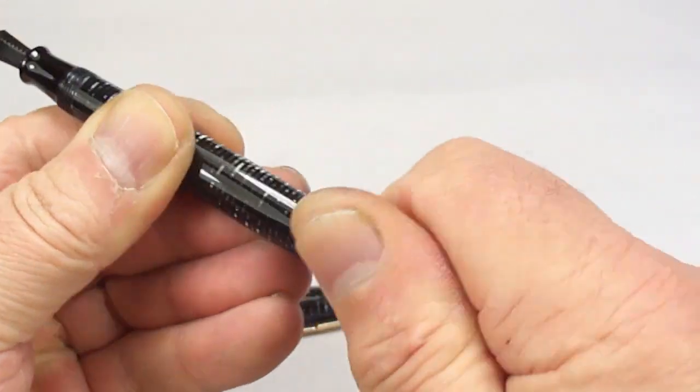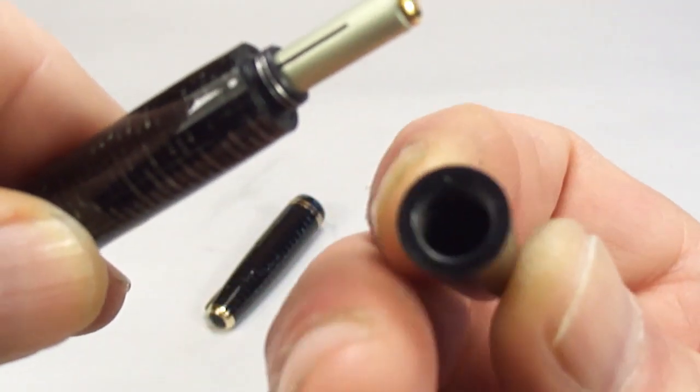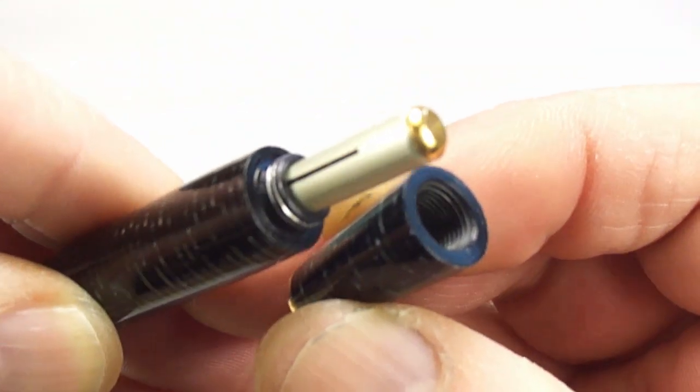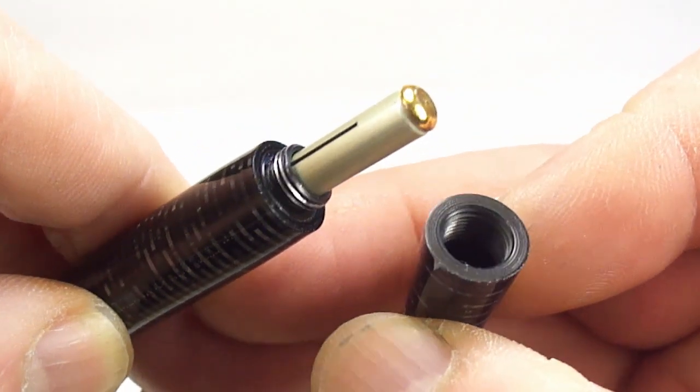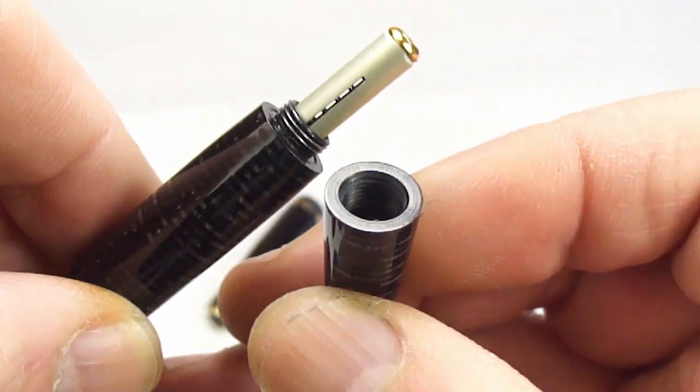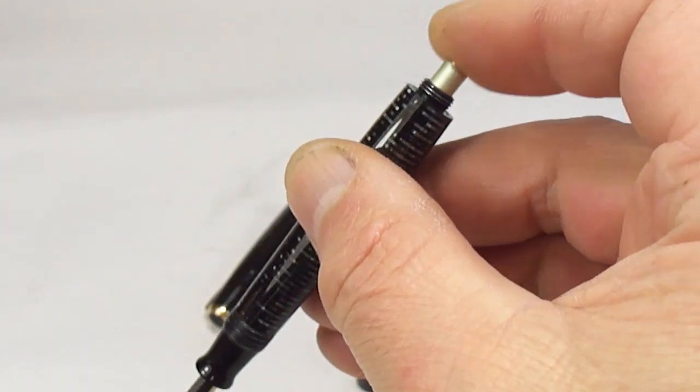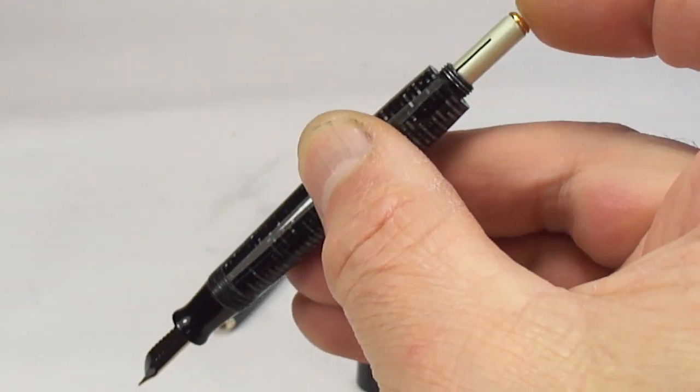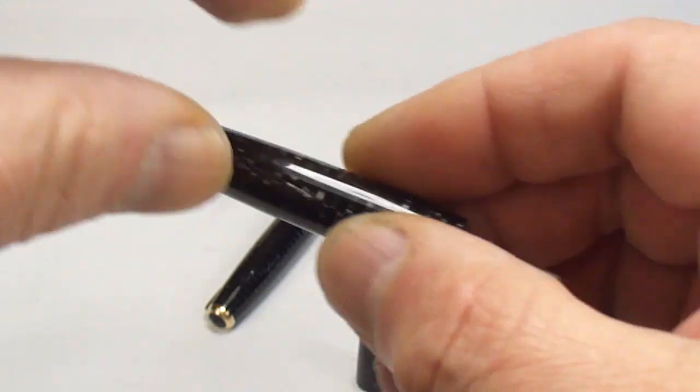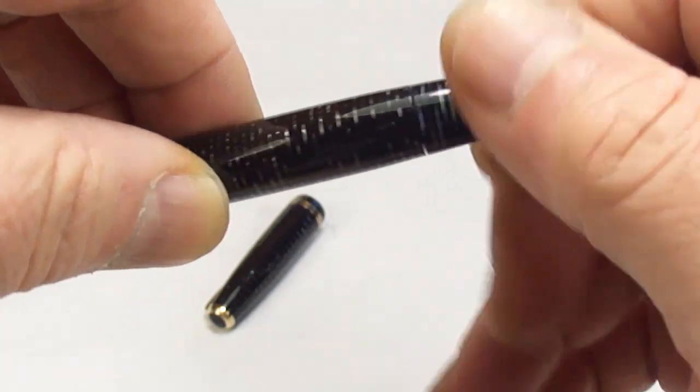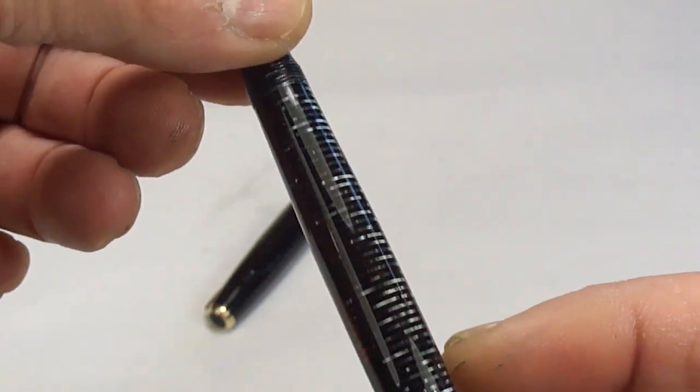This one is what we term as a speedline filler, which means you can see the blind cap and the filler in the pen itself. This is the second generation speedline filler. For those who don't know, we dip the nib and a little bit of the section in the ink and press down numerous times on the filler, and that sucks the ink into the barrel.